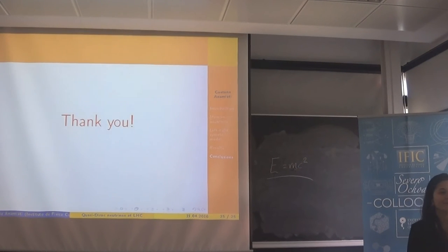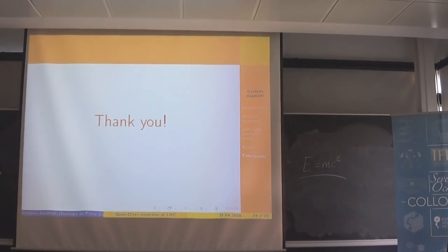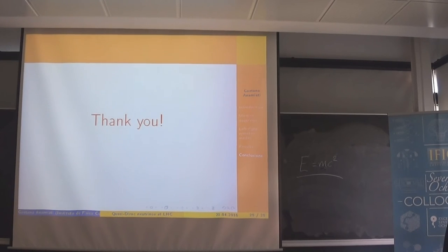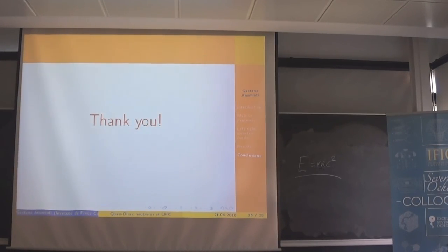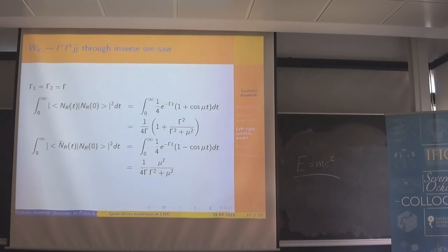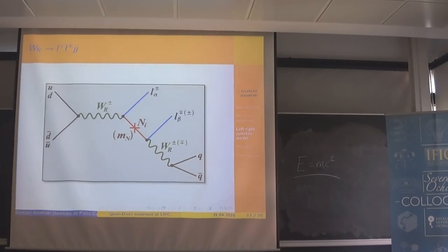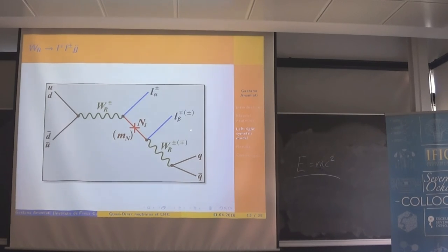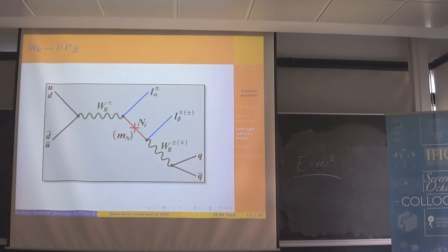Have you tried to look at four leptons instead of two jets? No. However, the important thing — the goal of the work — is here: it is just the neutrino propagator, because here you understand if there is lepton number conservation violation. Yes, but for the top signal, it's very low. Maybe the signal-to-background ratio is good.